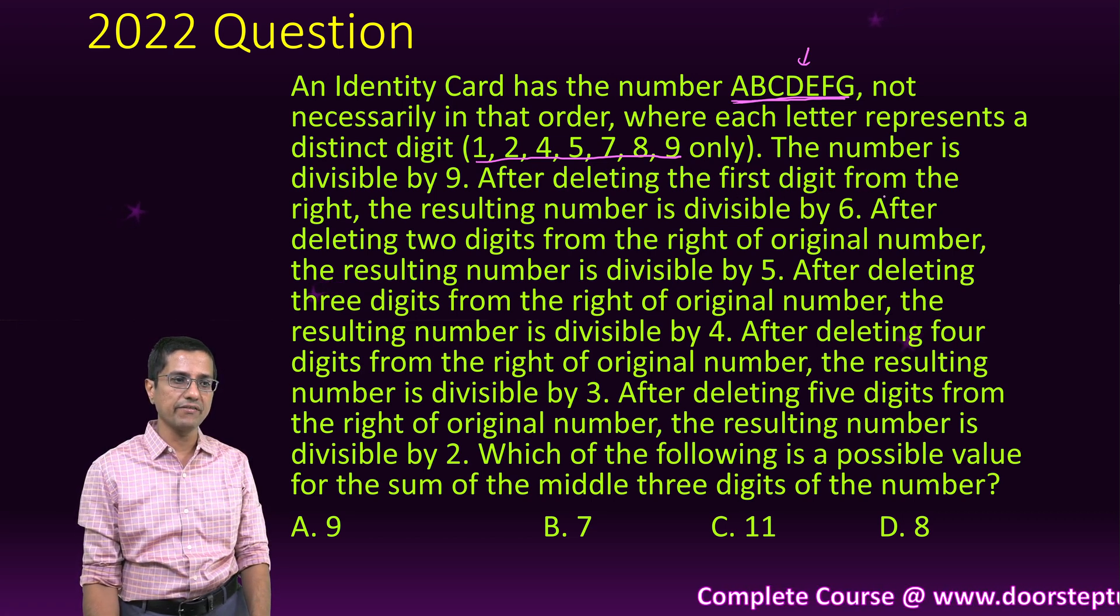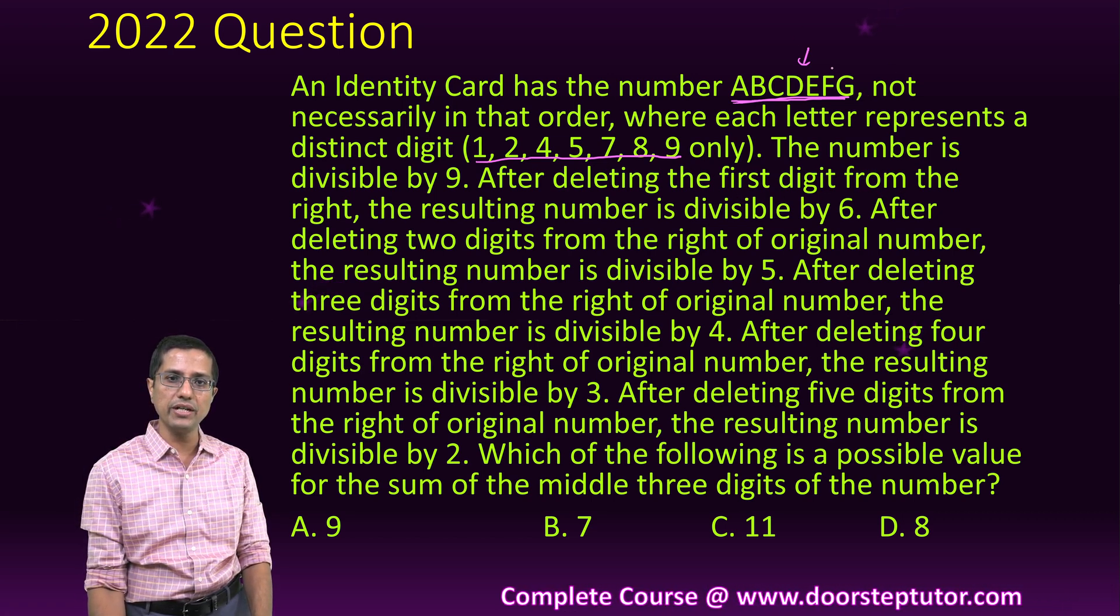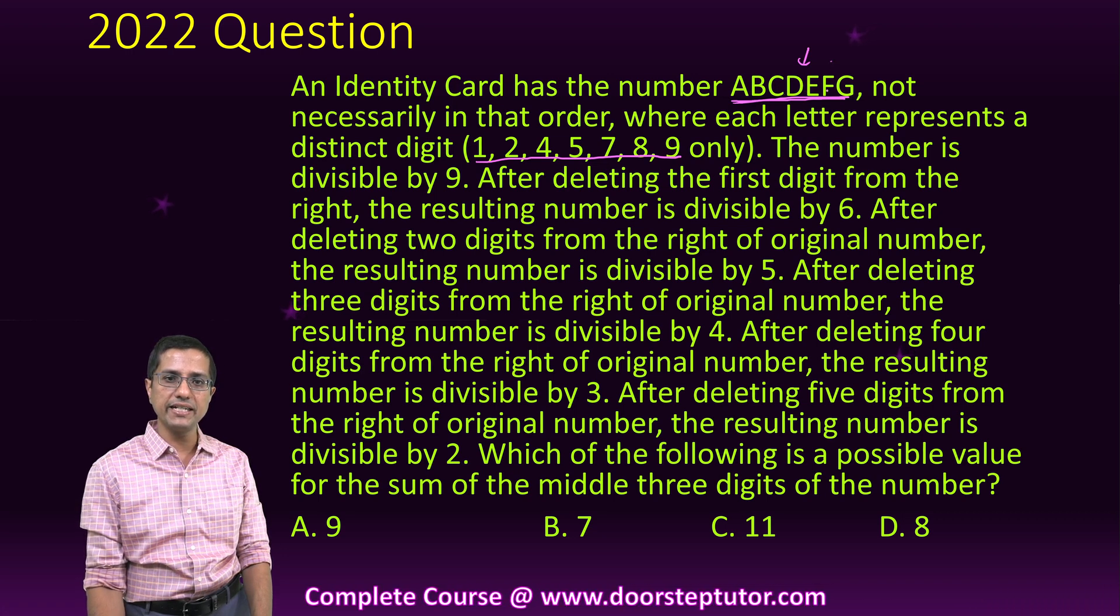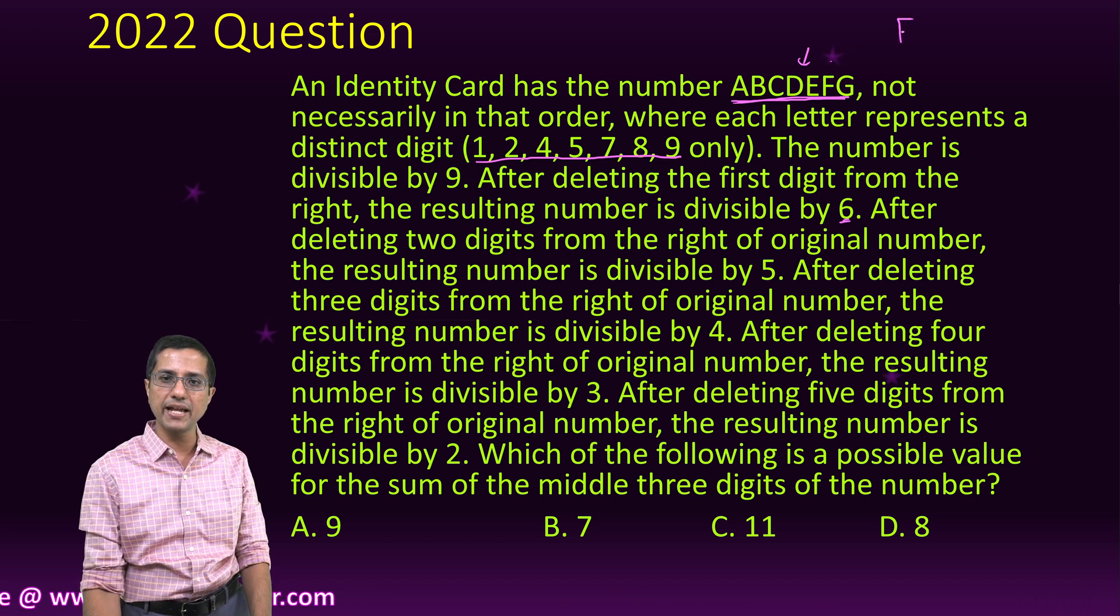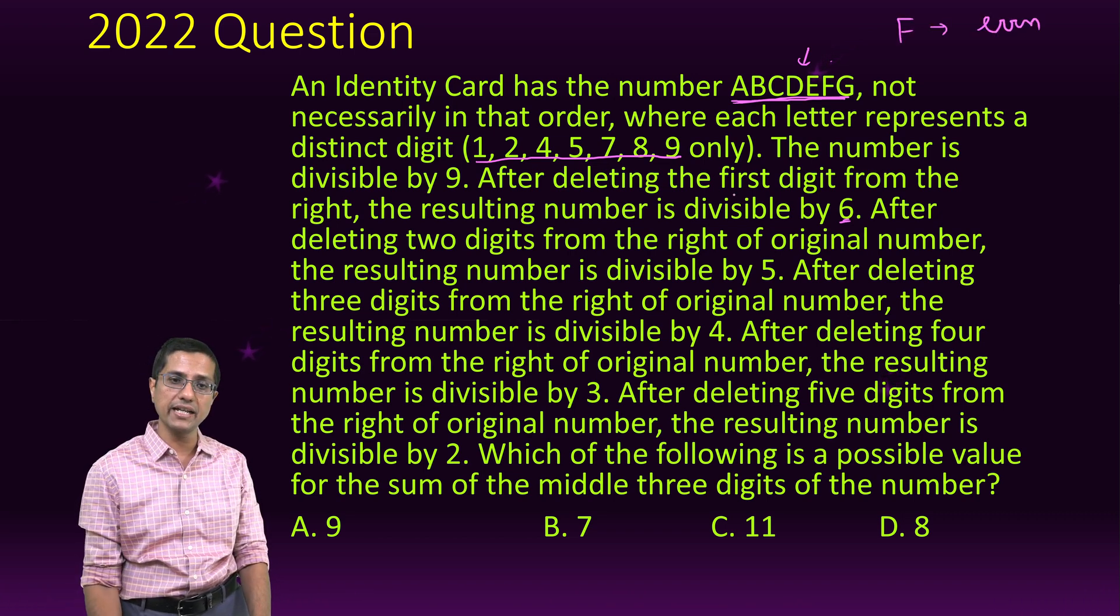If we delete the first digit from the right, so if I take only this number ABCDEF, then the number is divisible by 6, which means that my F is actually even. I can tell right away.